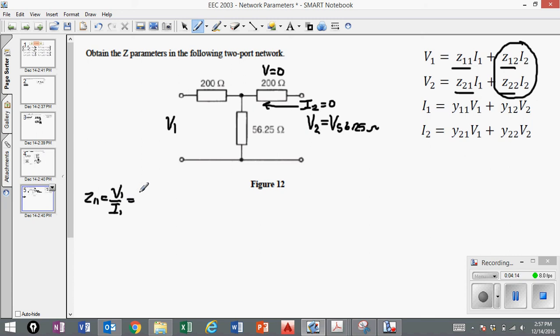Well Z1, if I2 is equal to zero, is equal to V1 over I1. You can think of this as V total over I total. And we already know how to calculate V total over I total if they give us the value of the resistors. Since all of the current from the source would only go through these first two resistors, basically the value of Z total, Z11, would equal the 200 ohm resistor in series with the 56.25 ohm resistor.